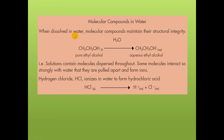When molecular compounds are dissolved in water, many of them maintain their structural integrity — in other words, they don't dissociate. Ethanol is an example of that. Some molecules will interact so strongly with water that they are pulled apart and form ions. One example is hydrogen chloride. When hydrogen chloride gas is dissolved in water, it ionizes to form hydrochloric acid.